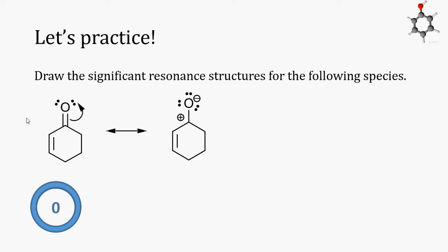This is a significant resonance structure. We're allowed to have these two charges adjacent because the negative charge is on oxygen and the positive charge is on carbon. It's also okay that the carbon atom has an incomplete octet. Carbon is allowed to do that.